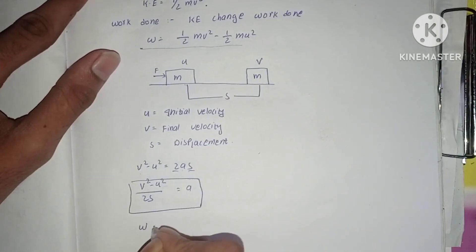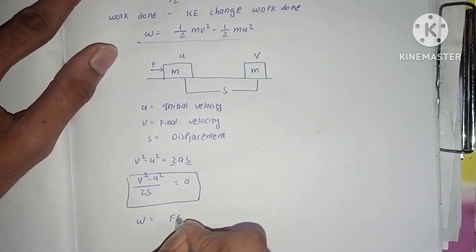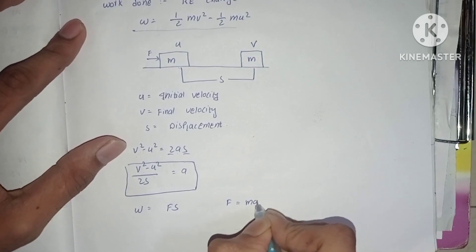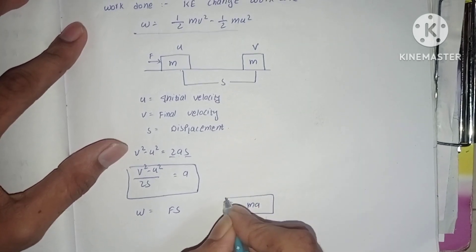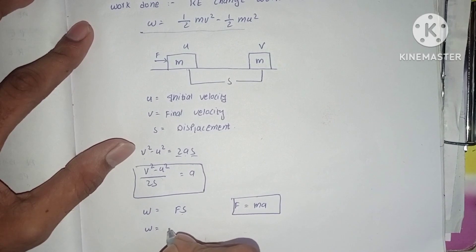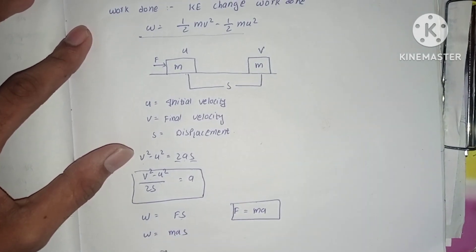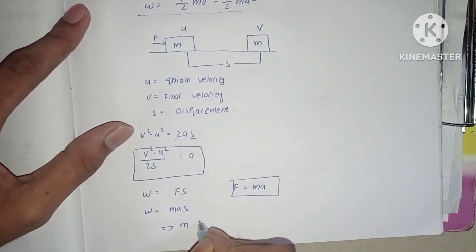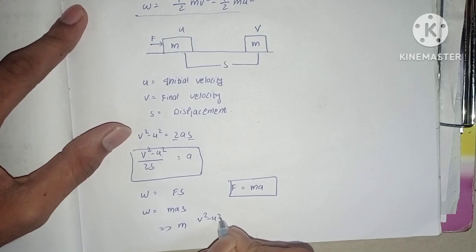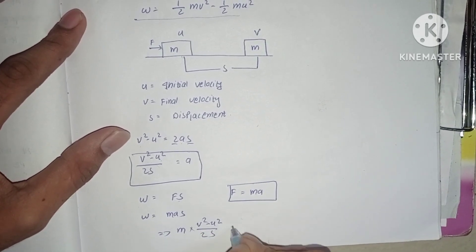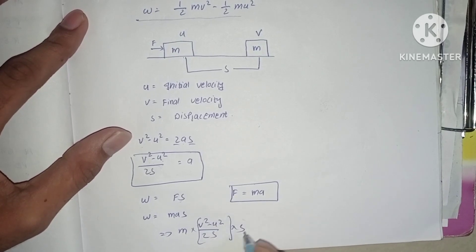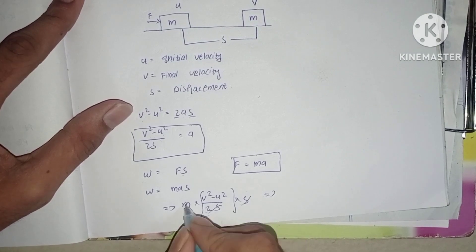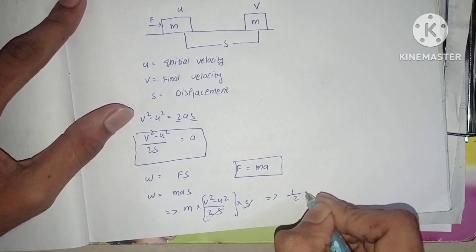We know the formula for work: W = F·s. Since force F = ma, we write W = ma·s. Substituting a = (v² − u²) / 2s, we get W = m × [(v² − u²) / 2s] × s. Here s and s cancel, giving W = ½m(v² − u²).